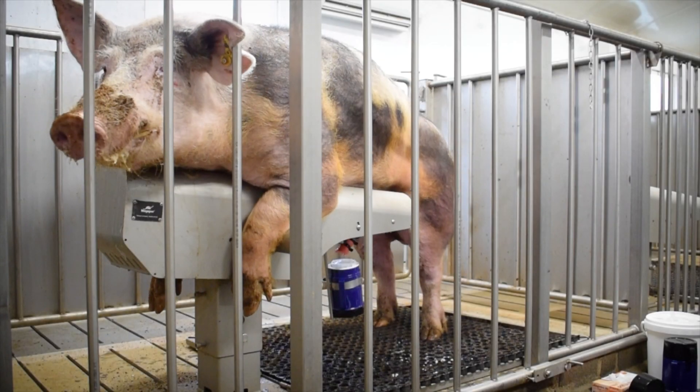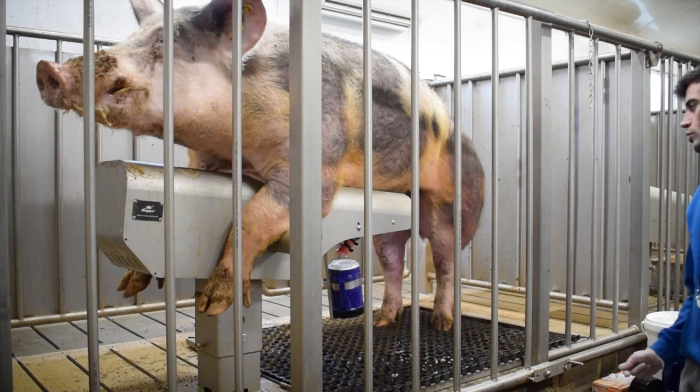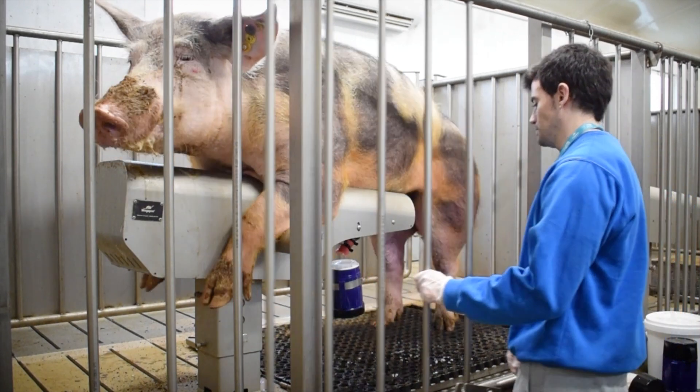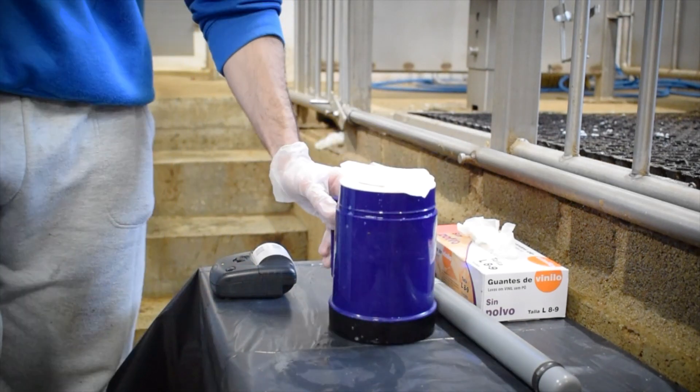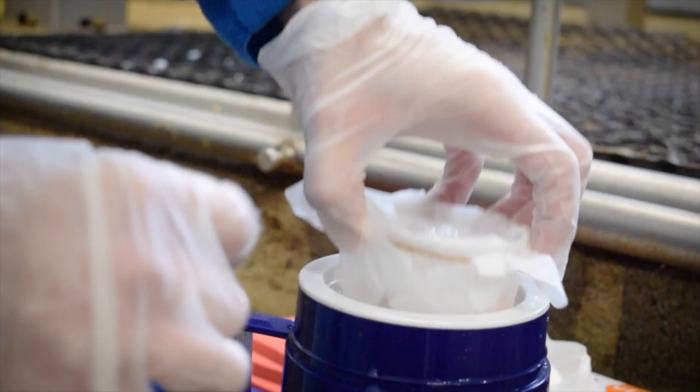When the boar finishes, the relaxation of the penis causes it to be released automatically from the cervix and collection support. Once the extraction is completed, the printed label is placed through the GSP traceability system, which will accompany the ejaculate to the analysis laboratory.